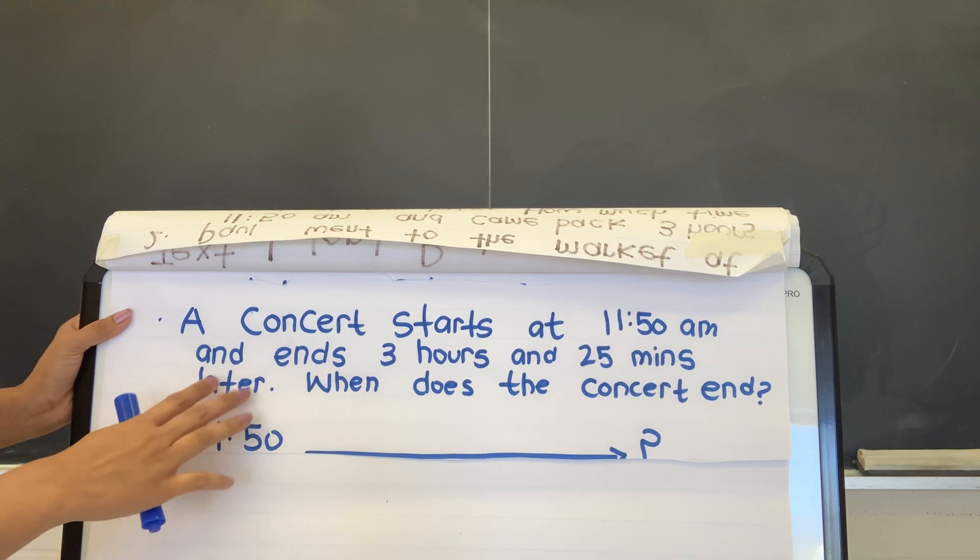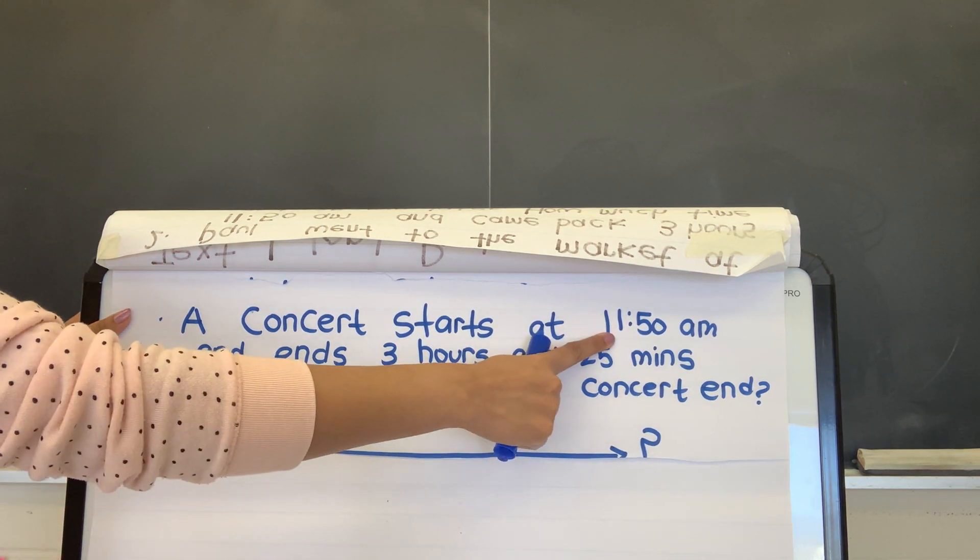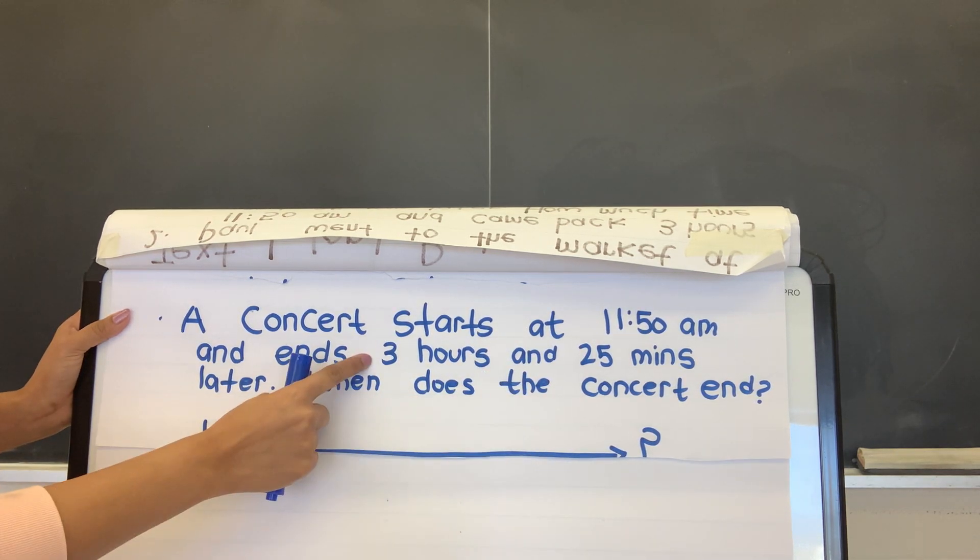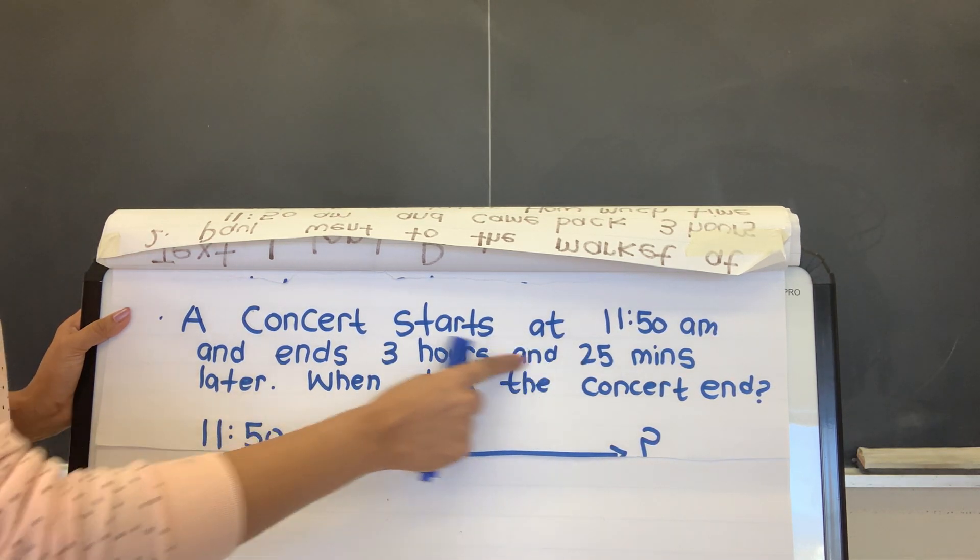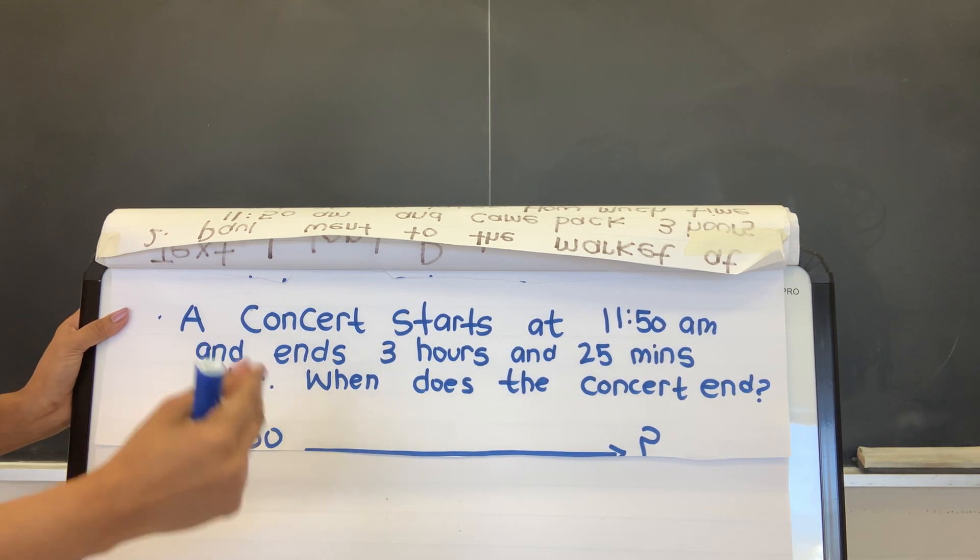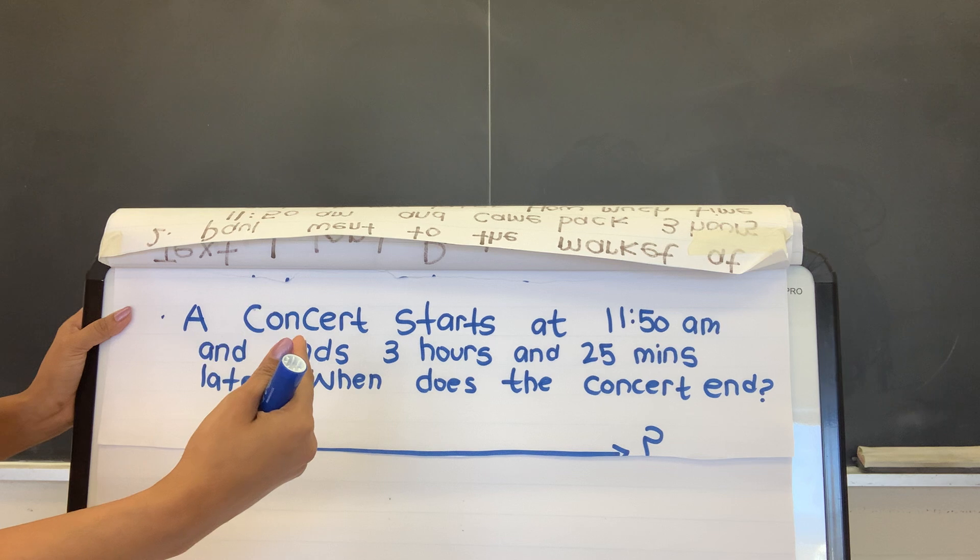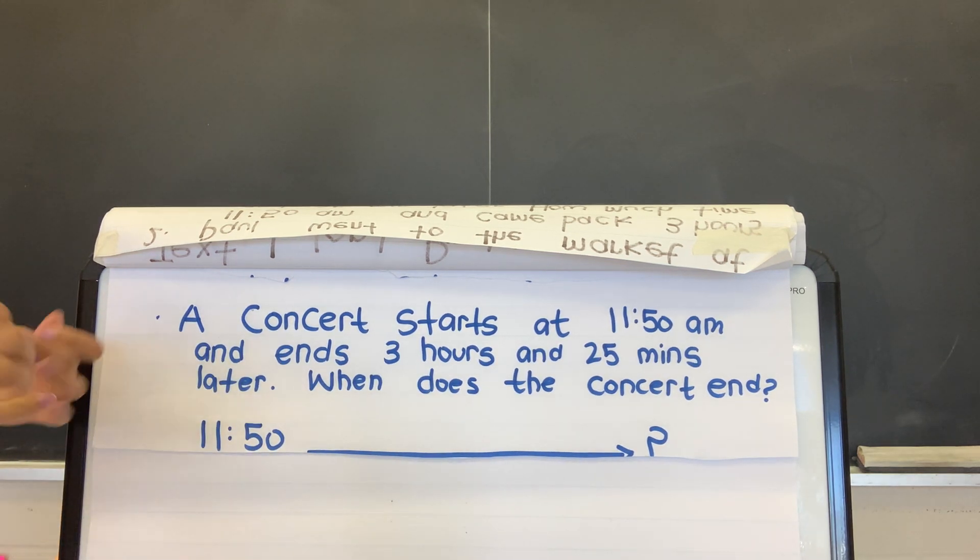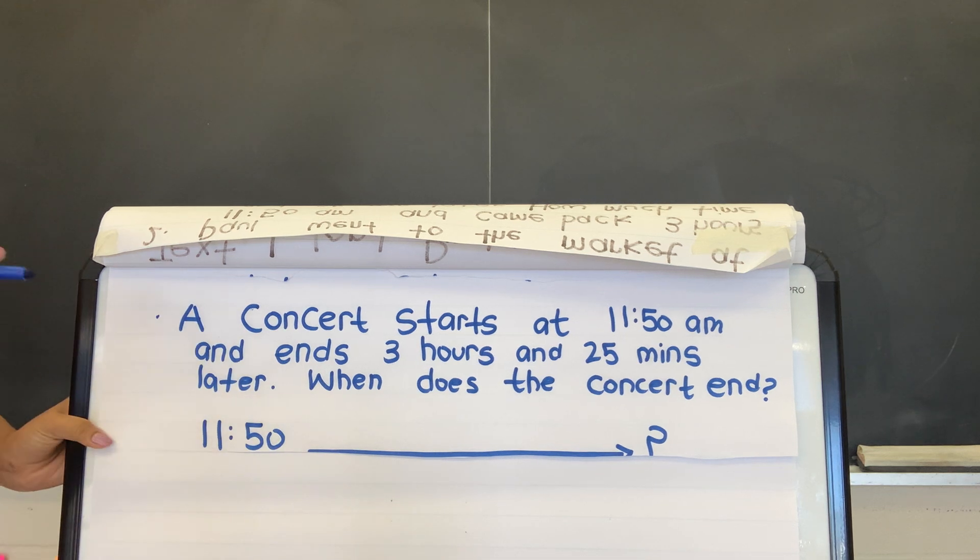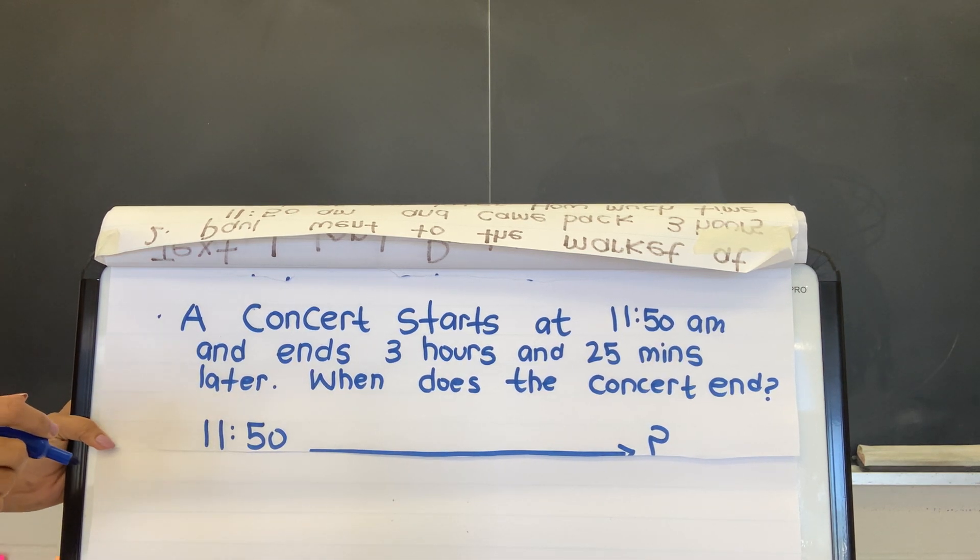In this question, we are only given the starting time, but we don't know the ending time. We know that altogether, it's supposed to be 3 hours and 25 minutes, but we don't know exactly when the concert ended. So what we can do is, we can count up 3 hours.